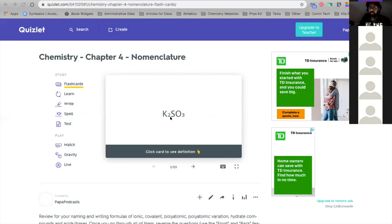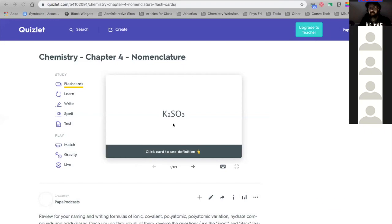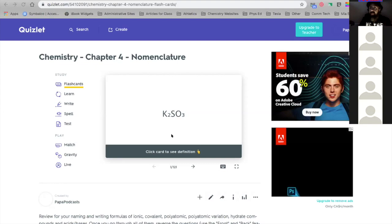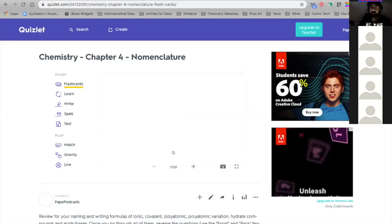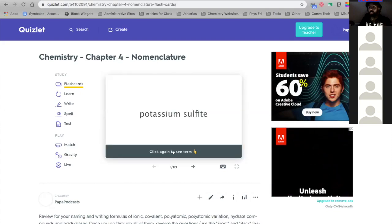So the way to use this is to look at the formula, try to figure out what the answer is. And then once you figured out what the answer is, click card to see the definition and you will see the actual answer. So it's a great way to kind of test out your knowledge.